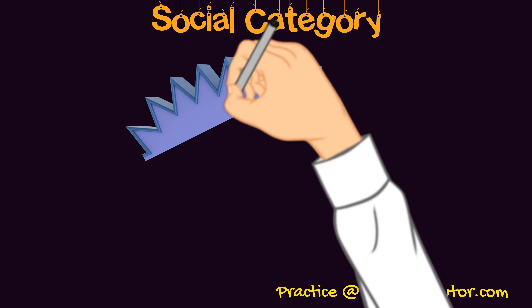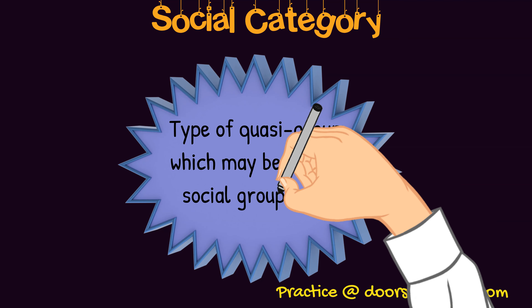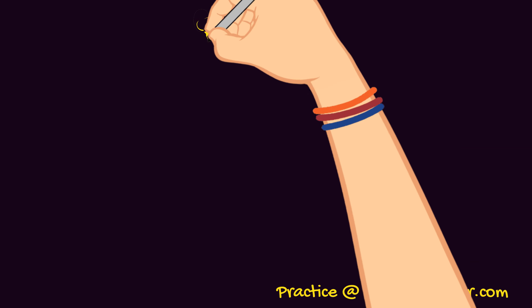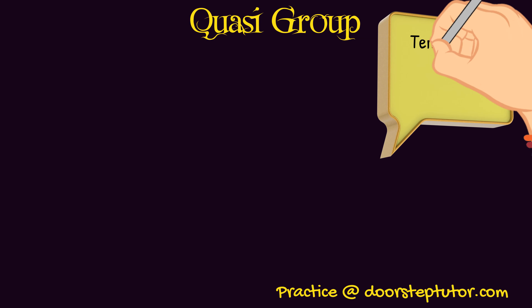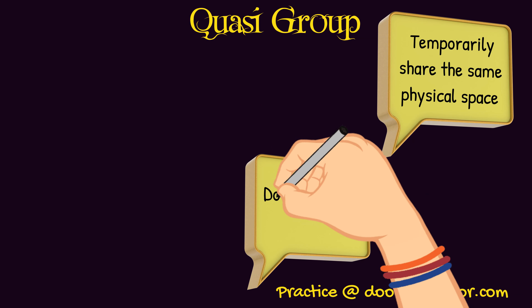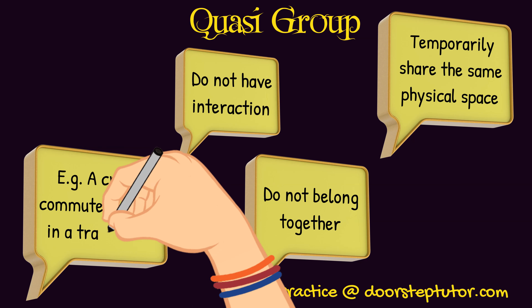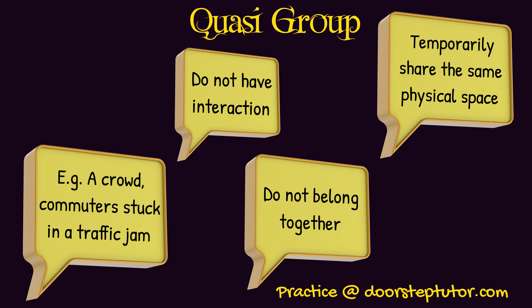A quasi-group has the potential of becoming a social group over time. For example, a group chosen on the basis of some characteristics may form a social group when they come into interaction with each other. Features of a quasi-group: they temporarily share the same physical space, they do not belong together, and they do not have interaction. Examples include a crowd gathered at an accident scene — sharing the same space temporarily but not belonging together — or commuters stuck in a traffic jam for long hours.